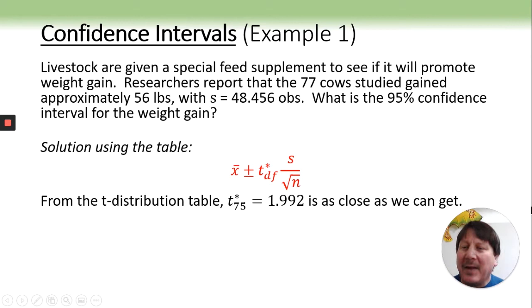From the T distribution, we have our degrees of freedom is 76, but our T distribution doesn't give us 76. It only gives us 75, and that gives us our T star. Much easier to find the T star on the T table than it is to find the Z star on the normal table.